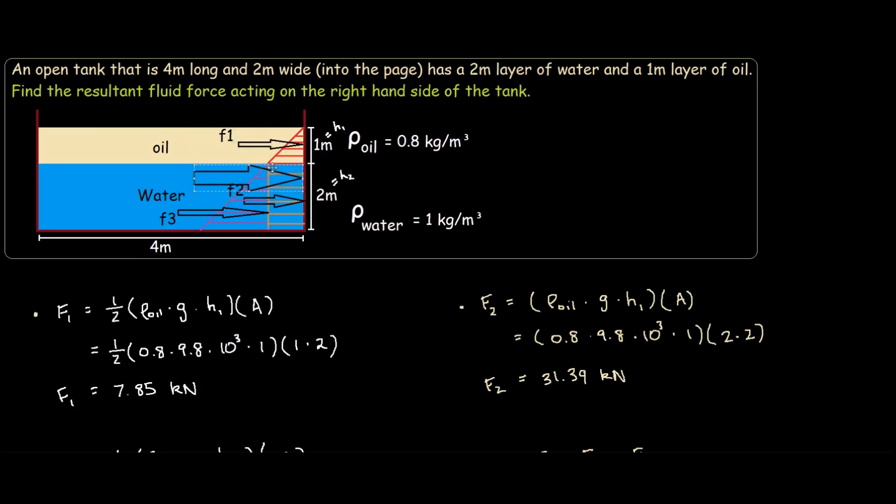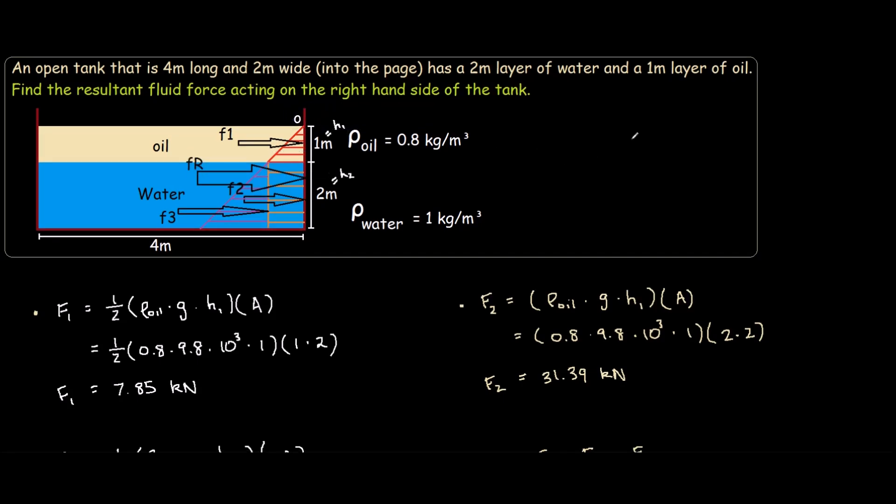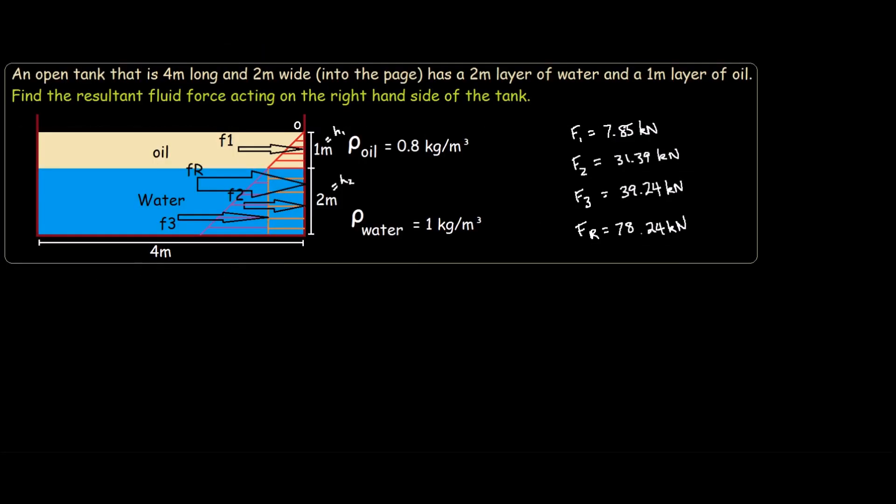To find its location, we will be using moments based on a reference point O. If we were to take moments about point O, it would be FR times some distance DR from O would equal to F1 times some distance D1 plus F2 times distance D2 plus F3 times some distance D3.